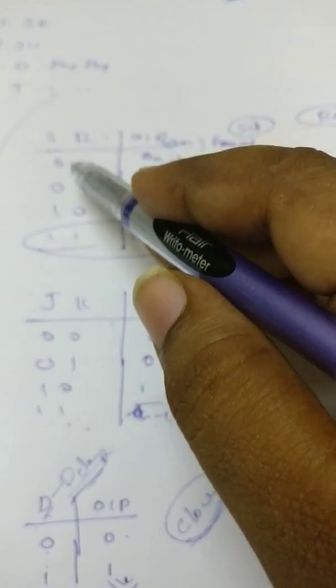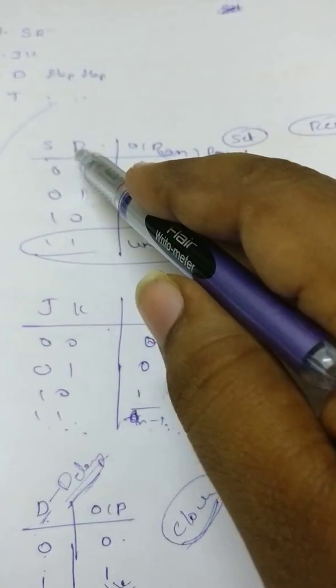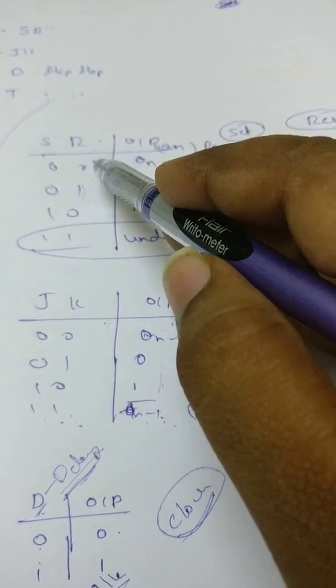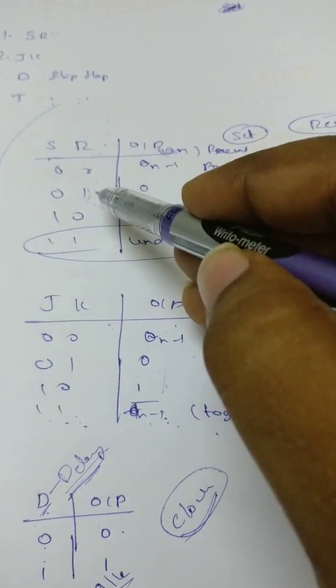In this case, for SR two inputs, we have four combinations: 00, 01, 10, 11.